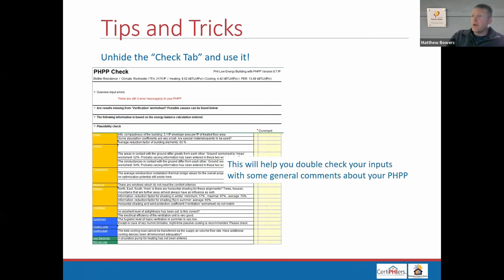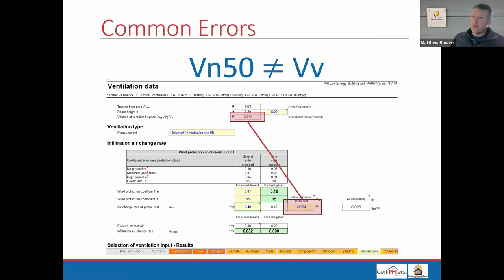Continuing down the Check tab, you'll find reasons why certain values on the verification tab are missing — for example, why you don't have a heating demand number even though you think you've entered everything. It covers heating, cooling, PE, and PER. Further down there's a plausibility check, which cross-checks things like whether your roof area and slab area are relatively close, whether ventilation rates seem appropriate, and whether you've entered a circulation pump when calling for a domestic hot water circulation loop. As part of certification, the certifier will go through the Check tab to make sure all items have been cleared or commented on.